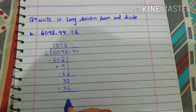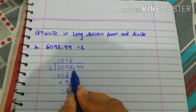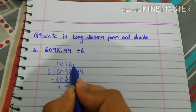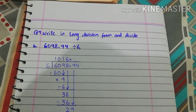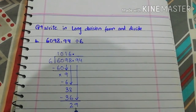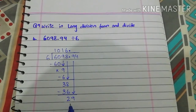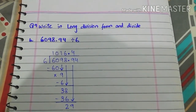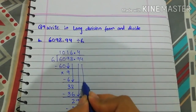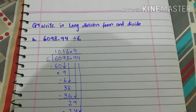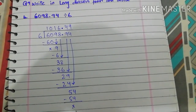Subtract: 8 minus 6 is 2, 3 minus 3 is 0. Bring down the next digit, which is 9, but before it we have a decimal, so we place the decimal in the quotient. Bring down 9, making 29. 6 fours are 24; subtract: 29 minus 24 gives 5 in the ones and 0 remainder. Bring down the last digit, which is 4, making 54. 6 nines are 54; 54 minus 54, remainder 0.